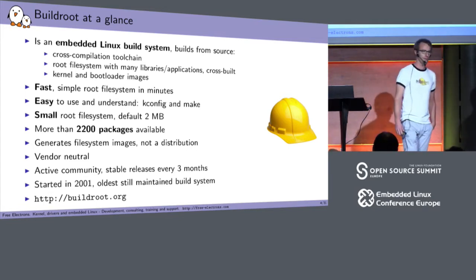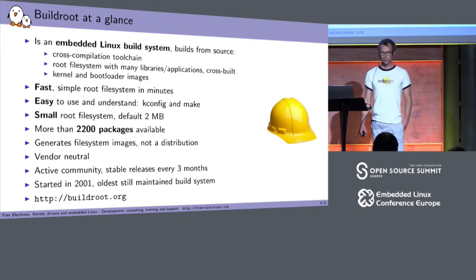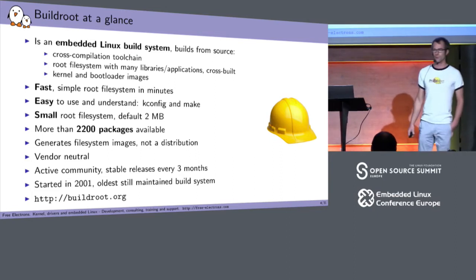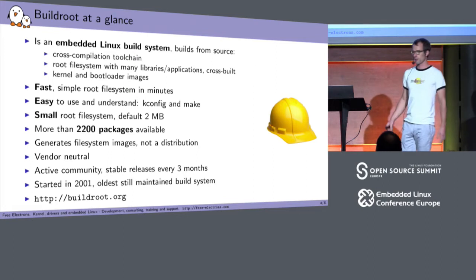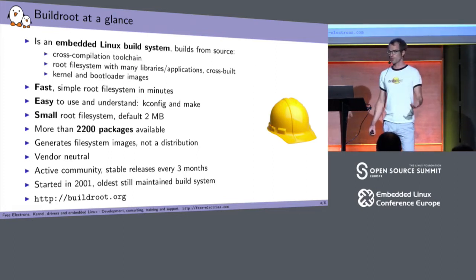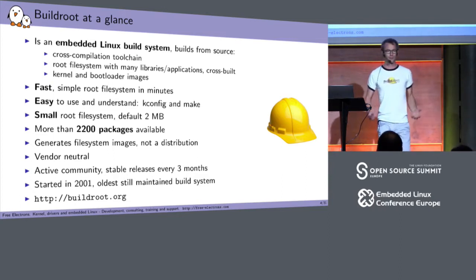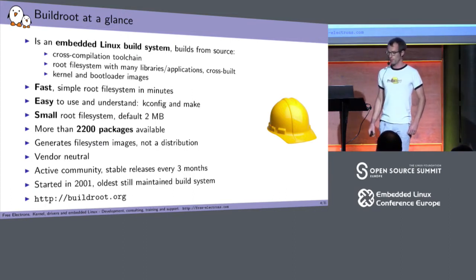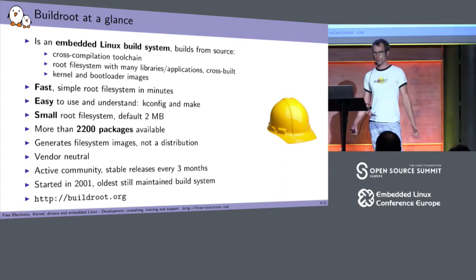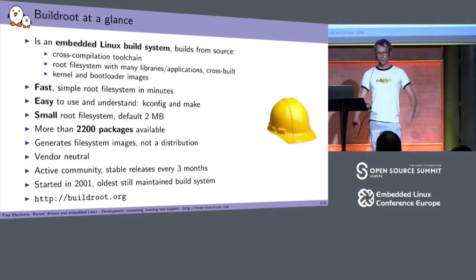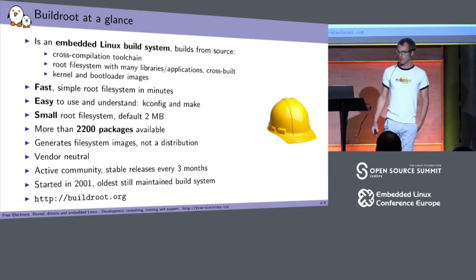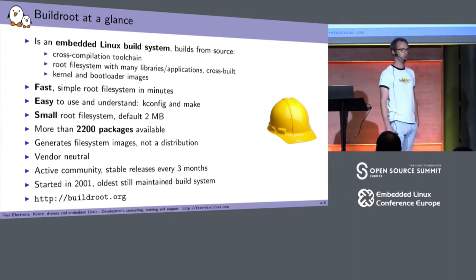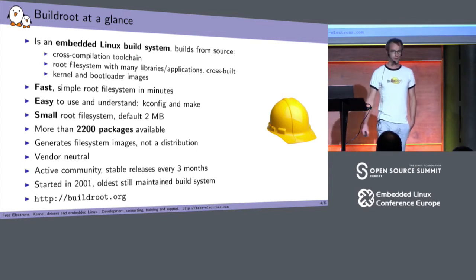Buildroot tries to be fast and simple — those are clearly the two main goals. It tries to be easy to use and understand. We use kconfig to describe the configuration, so you run make menuconfig and can set your target architecture, what components you want, which kernel version, the kernel configuration. It's saved in a .config file. Then you run make and it downloads everything, builds a toolchain, kernel, all user space components, and creates a root file system image. We generate by default a pretty small 2-megabyte file system with just BusyBox and uClibc. We have more than 2,000 packages nowadays, ranging from BusyBox all the way up to a full X.org stack, GStreamer, Qt, and many other things.